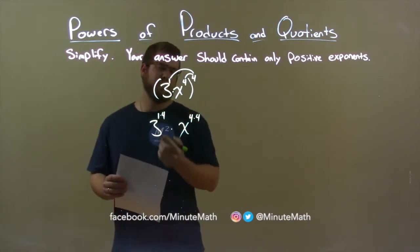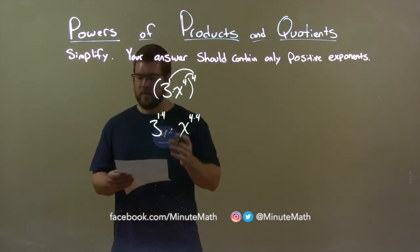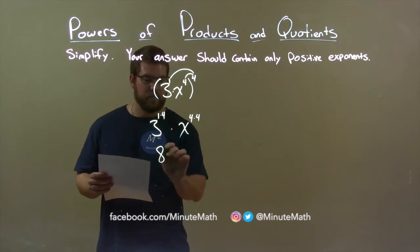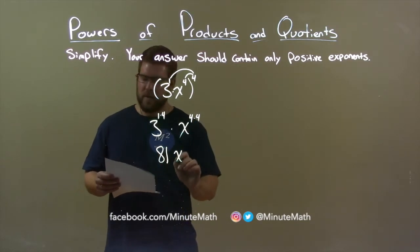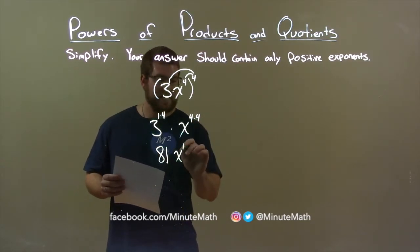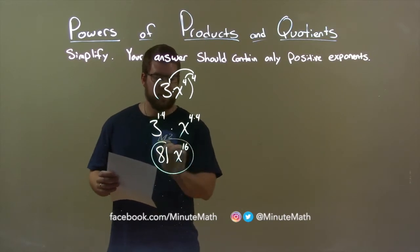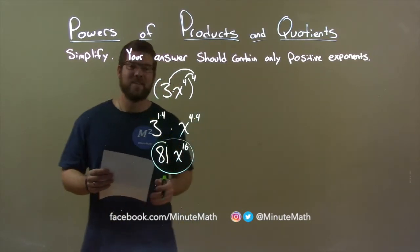Well, 1 times 4 is 4, and 3 to the 4th power is 81. x comes down, and 4 times 4 is 16, and so my final answer is 81x to the 16th power.